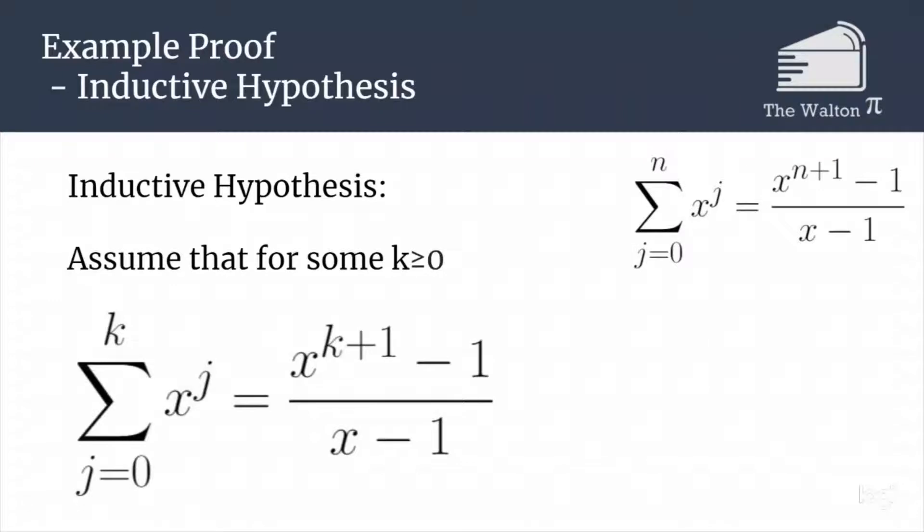We now need to state our inductive hypothesis. We are going to assume that it's true for some k. So we will assume that for some k greater than or equal to 0, the sum from j equals 0 to k of x to the j is equal to x to the k plus 1 minus 1, all over x minus 1.